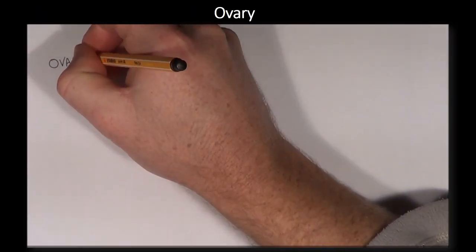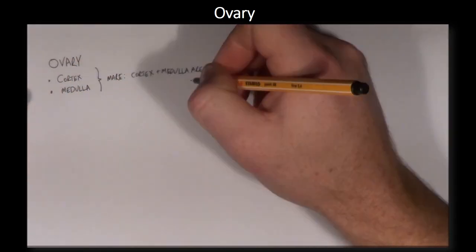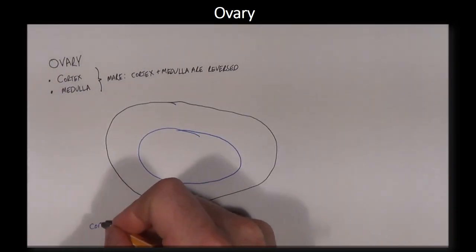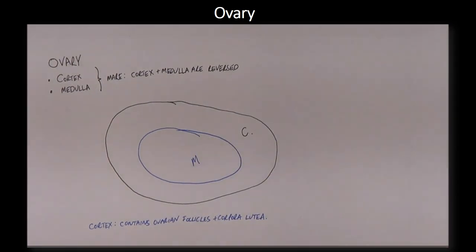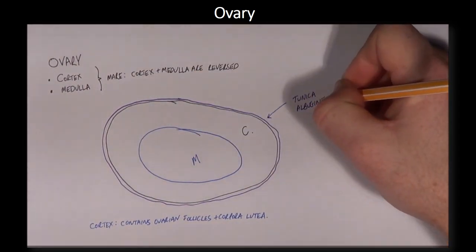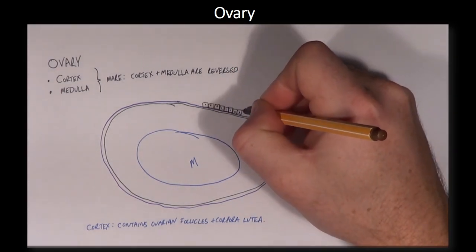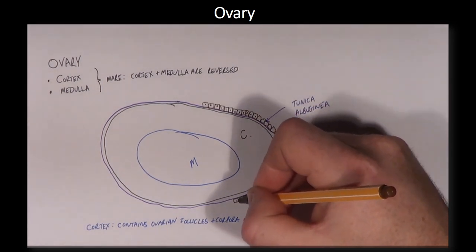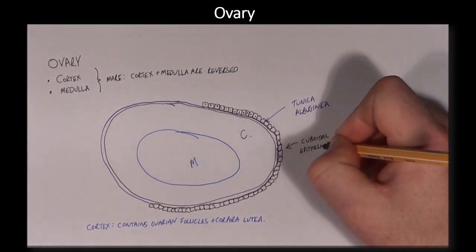The ovary is divided into the cortex and the medulla. The ovarian cortex is outermost while the medulla is innermost. In the mare, the cortex and medulla are reversed so that the cortical tissue lies inside. Not only does the ovary produce oocytes for fertilization, but it is also endocrinologically active, producing hormones that regulate the reproductive cycle. The ovarian cortex is covered by a thick connective tissue layer called the tunica albuginea, on top of which is a cuboidal surface epithelium. The cortex contains ovarian follicles at various stages of development as well as corpora lutea, all embedded in loose connective tissue.